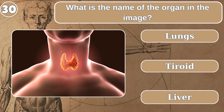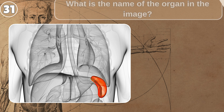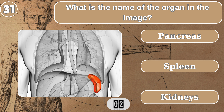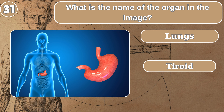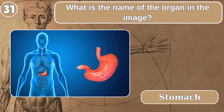What is the name of the organ in the image? Thyroid. What is the name of the organ in the image? Spleen. What is the name of the organ in the image? Stomach.